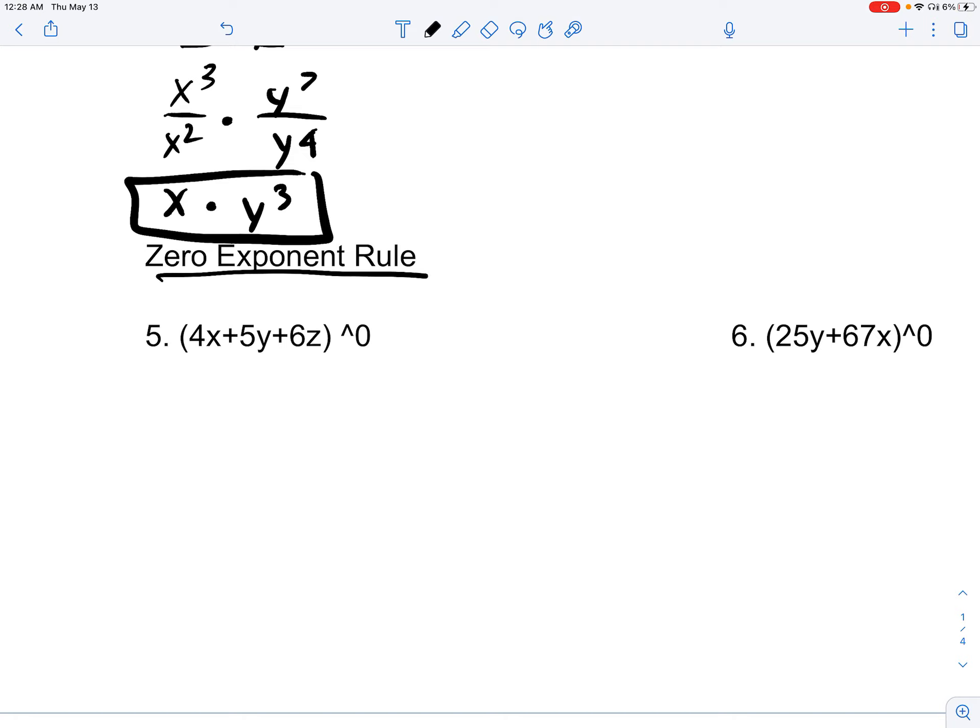Now, zero exponent rule is really simple. Even though there's such a complicated thing inside the parentheses, because it's to the 0th power, it's just 1.